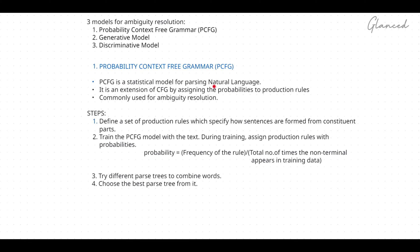PCFG is a statistical model for parsing natural language. What we are going to do with PCFG is first we are going to parse the natural language. It is an extension of CFG — that is, context-free grammar — by assigning probabilities to production rules. The difference between context-free grammar and PCFG is that in PCFG you are going to assign probabilities to the production rules.